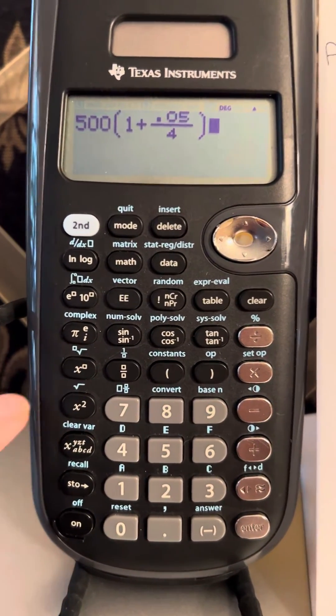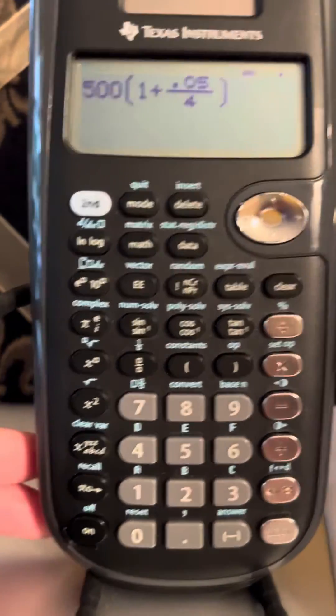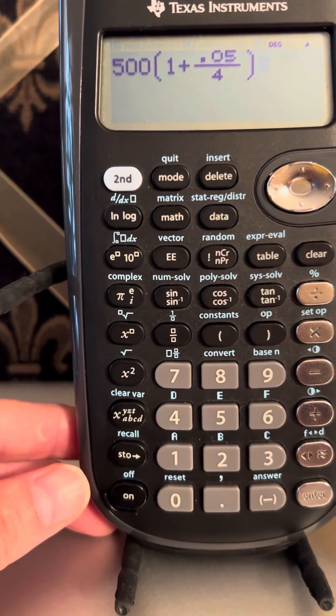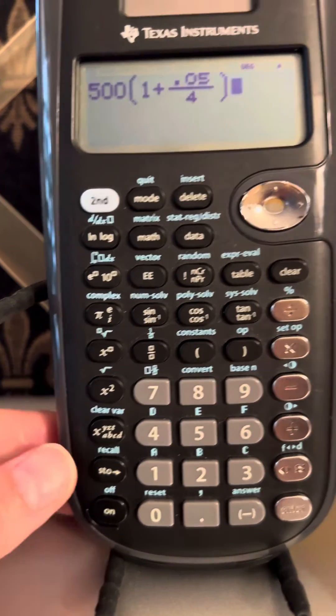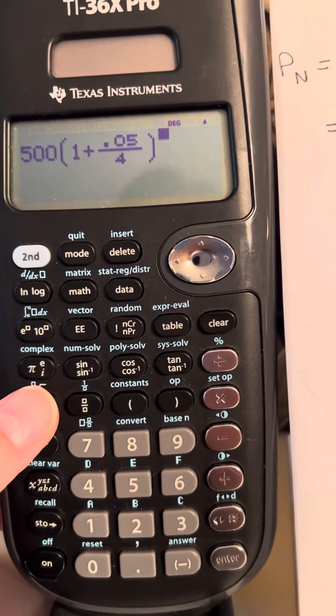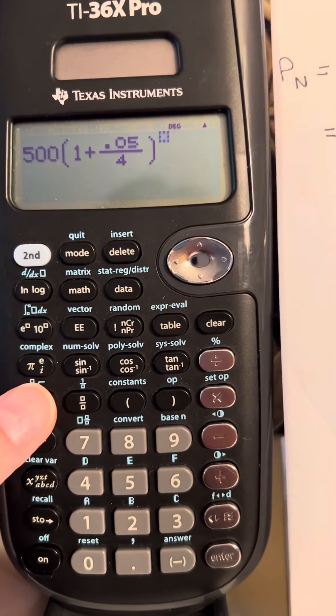So this button right here, this one right here, it's got an X and then there's a little box that's showing our exponent. And so we're going to press that button, and you see how it raises our cursor up into the exponent position.